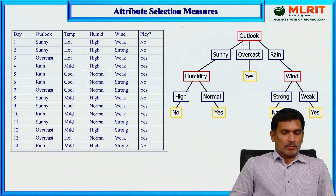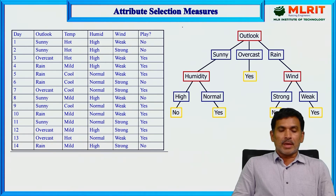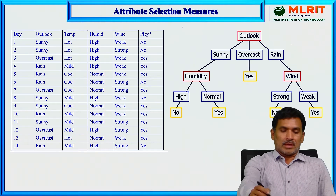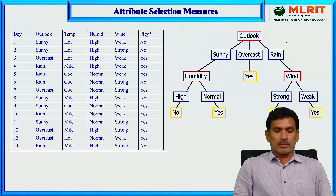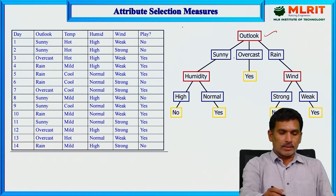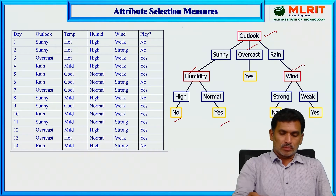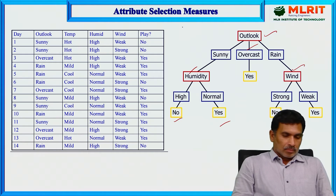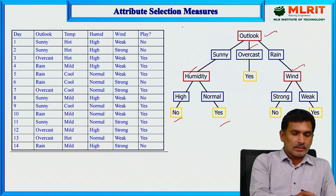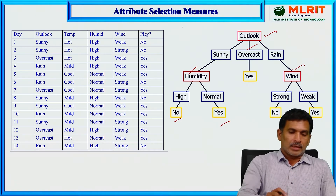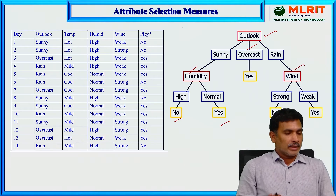Let us understand why we need to select an attribute and which is the best attribute. On the right-hand side there is a tree — this is a flowchart representation of the decision tree. The first attribute is outlook, divided into three branches: humidity, overcast, and wind. The nodes are represented with yes or no. The left side is the dataset and the right-hand side is the corresponding decision tree.